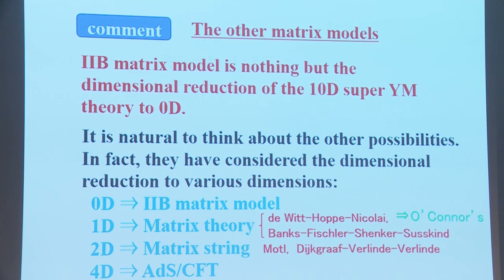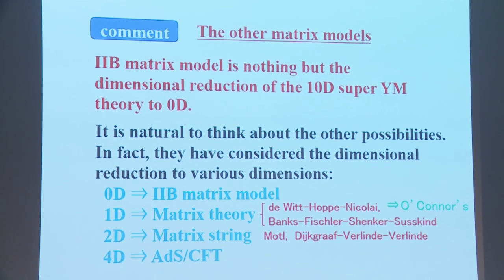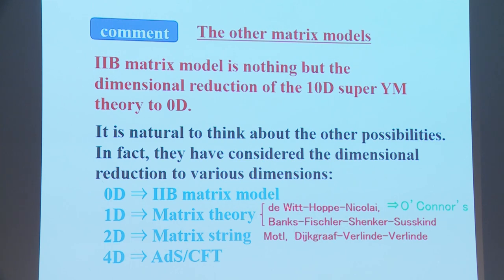The 2B matrix model is nothing but the dimensional reduction of 10-dimensional super Yang-Mills theory to zero dimensions. It is natural to consider other possibilities by reducing to various dimensions. Reducing to one dimension gives the famous Dijkgraaf-Vafa-Verlinde or Banks-Fischler-Shenker-Susskind matrix theory. Reducing to two dimensions gives matrix string theory, and reducing to four dimensions gives ordinary AdS/CFT.